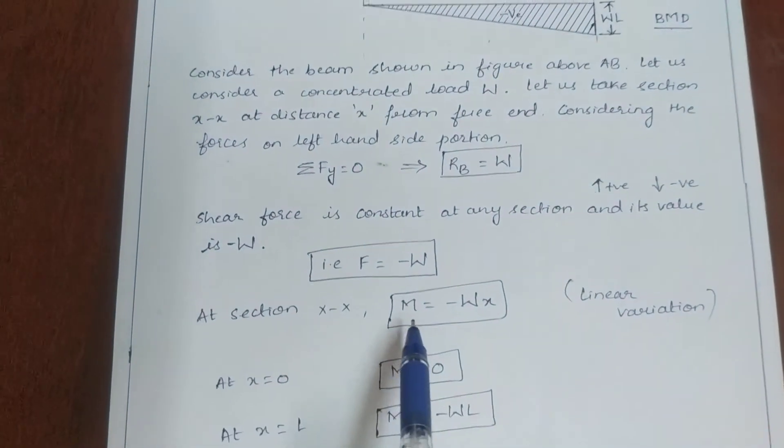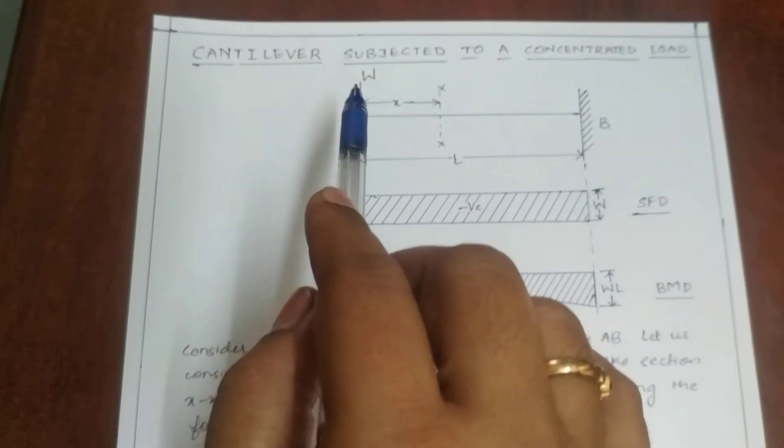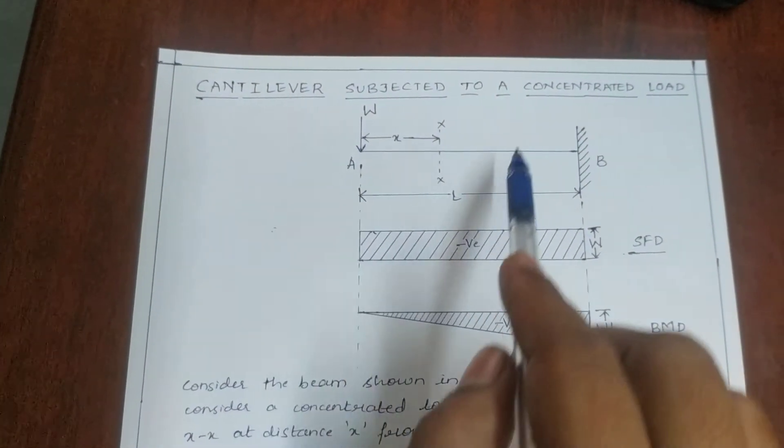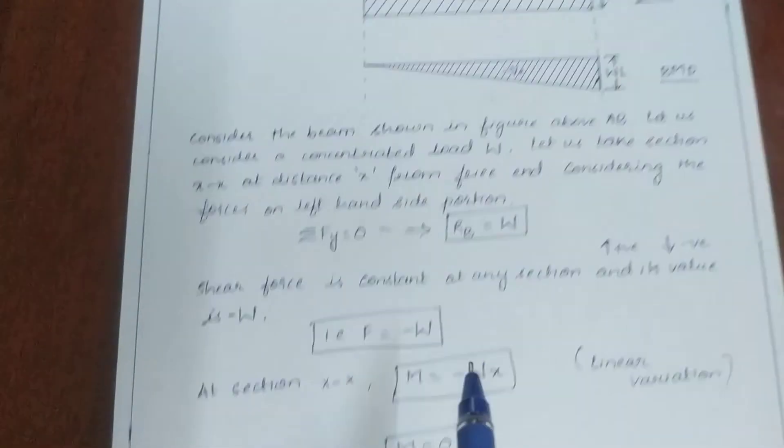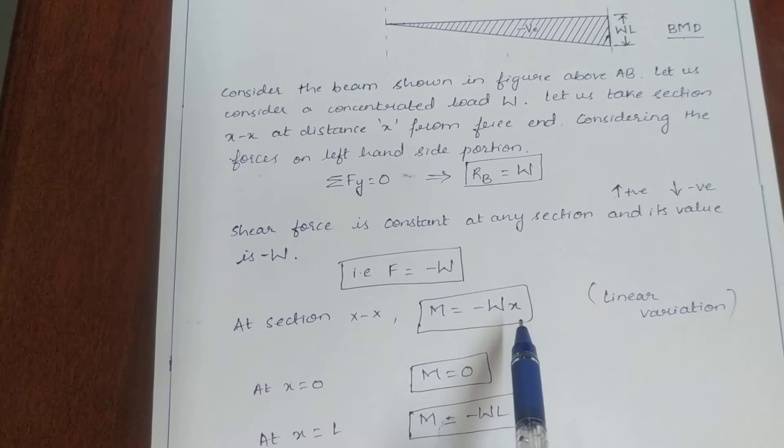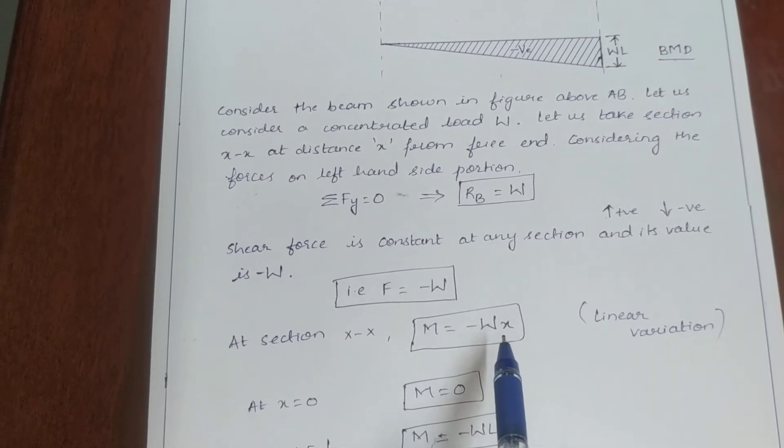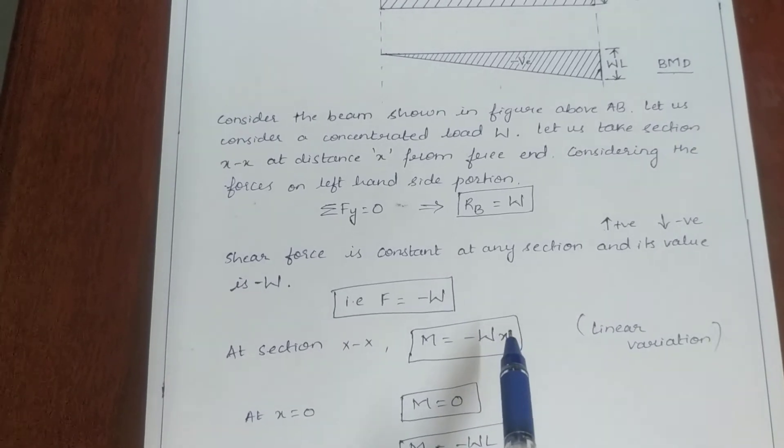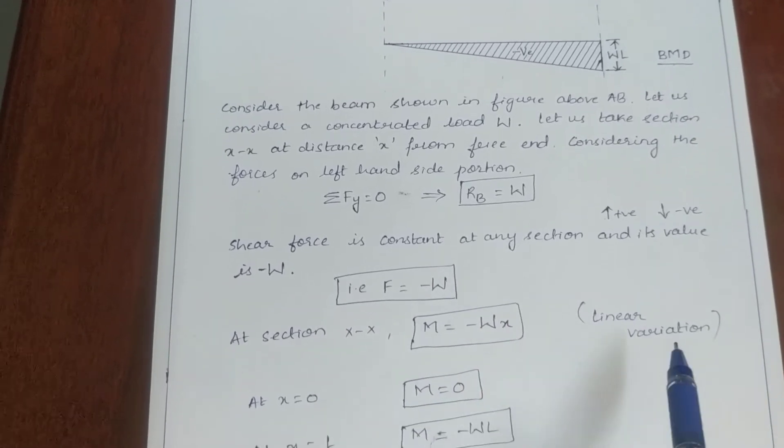M equals minus W into X, that is the load W into the distance X. And since it is causing anticlockwise moment, we will get M equals minus W into X. So we have to always draw it as a linear variation.